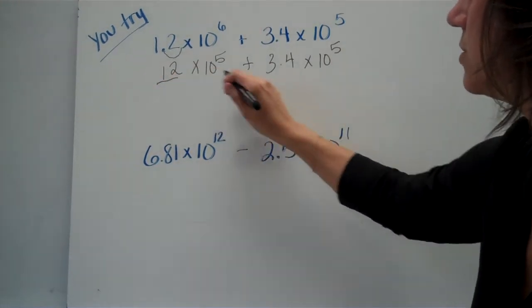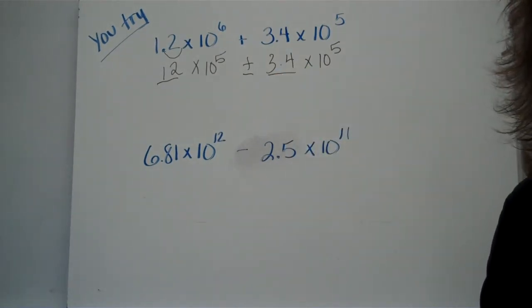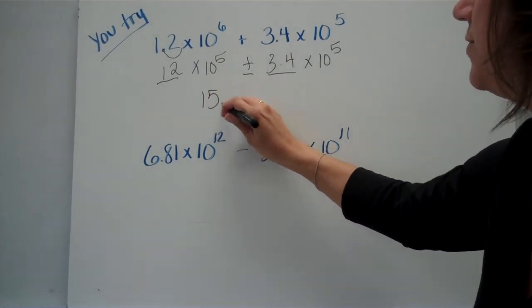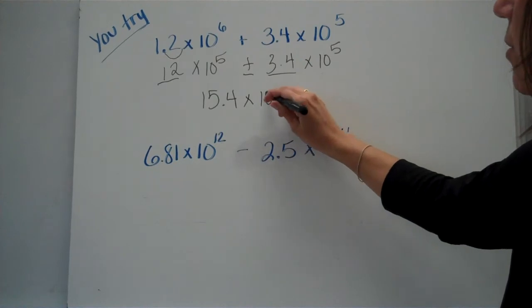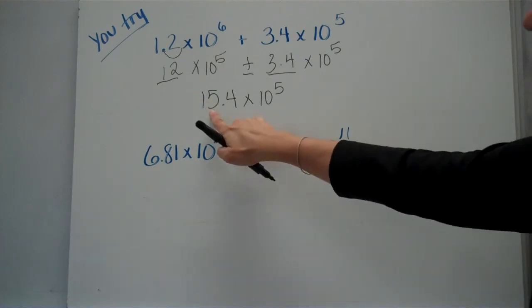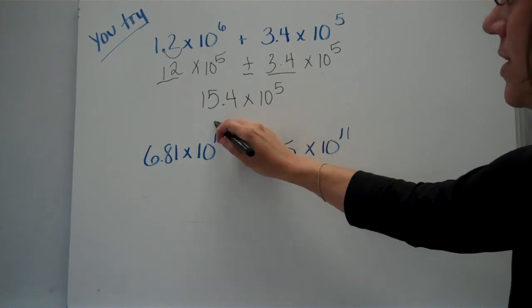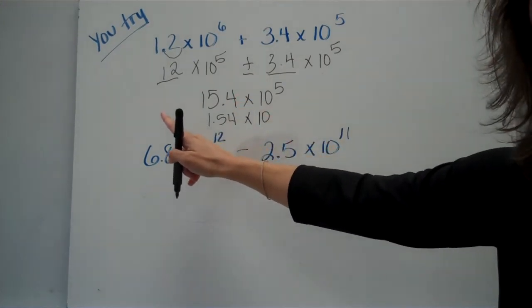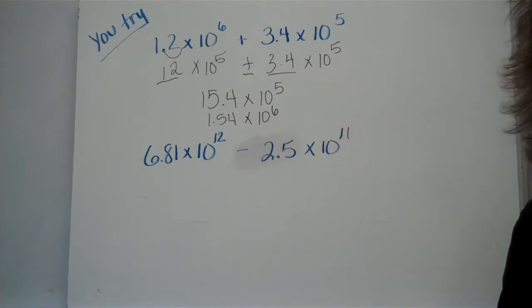Now that they both have the same power of 10, now I'm going to take the factors and add them together. Here's where your calculator can come in handy. If you add 12 plus 3.4, or 12 plus 3 and 4 tenths, you get 15.4, or 15 and 4 tenths. I'm going to keep my power of 10. And now my last step is to make sure it's in proper scientific notation. Here, this is a 15. Remember, it has to be between 1 and 10. So I'm going to be moving this decimal point over. And did you remember what to do with the exponent when you move it in that direction? You're going to add 1. So this is 10 to the sixth power.